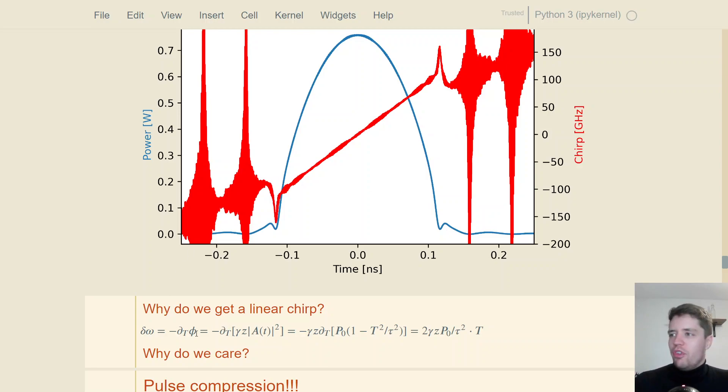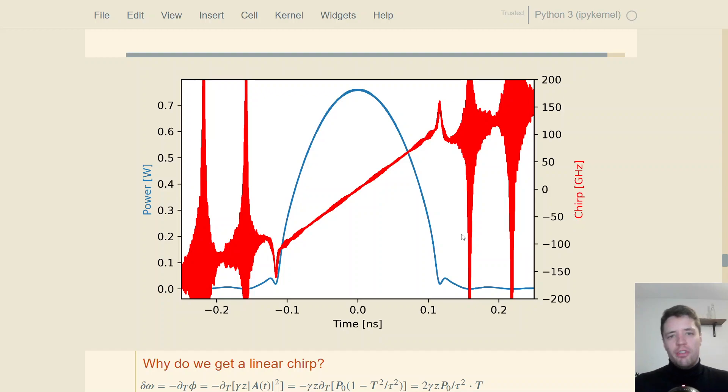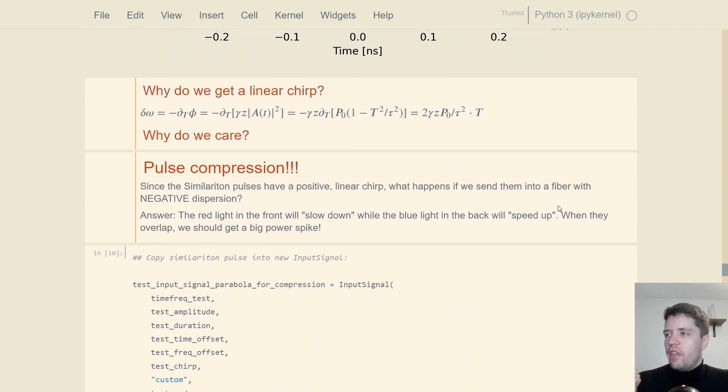So why do we care about this? Well, you might be able to see this little next header I've created here. But the essential idea is that if we have a pulse that has a linear chirp, it's very easy to do pulse compression because all we have to do is take this similariton pulse and launch it into a medium with a negative dispersion parameter. That's going to cause all of the blue light that slowed down to catch up to all the red light that sped up. And once they overlap, we should get a very large increase in the power.